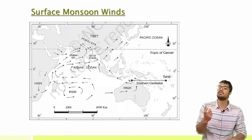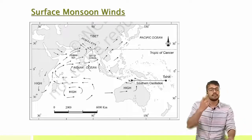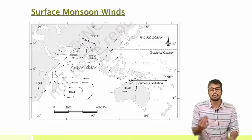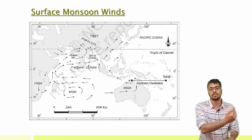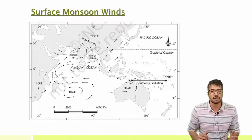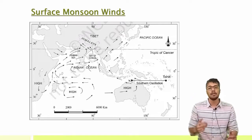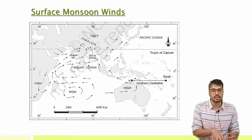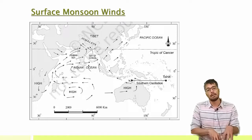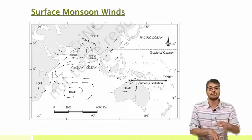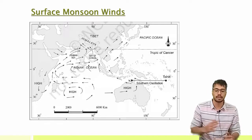Monsoon is derived from an Arabic word which means seasonal reversal of winds — the winds that traveled from southeast to northwest now move southwest into India. Why? Because the ITCZ is at the Tropic of Cancer, which corresponds to the Indian subcontinent, so there is extreme low pressure there, attracting all the high pressure winds from the surrounding areas.